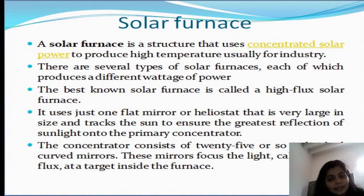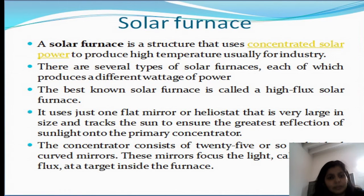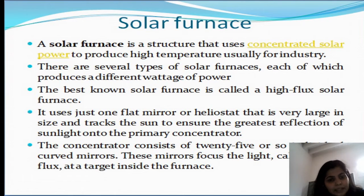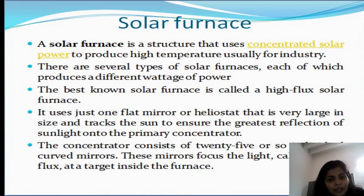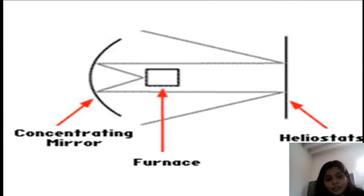Solar furnace is another device or structure that uses a concentrated type of solar power to produce high temperatures, and is especially used for industrial applications. There are many types of solar furnaces and each produces different power. The best known solar furnace is called a high flux solar furnace. In this, one flat mirror or heliostat that is very large in size tracks the sun to ensure greatest reflection of sunlight into the primary concentrator. We can see from the figure that it uses a concentrating mirror, a solar furnace, and a heliostat.